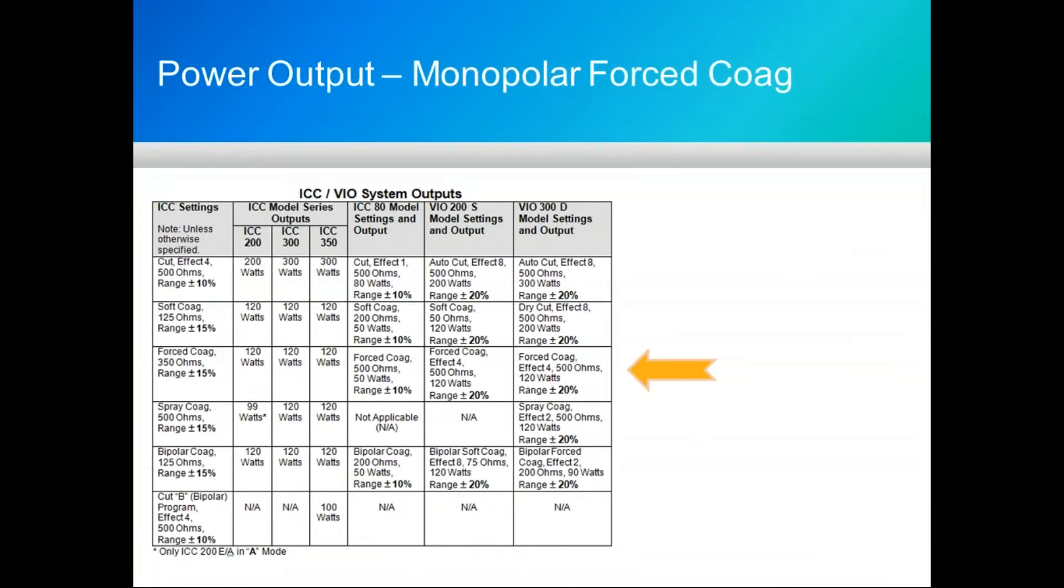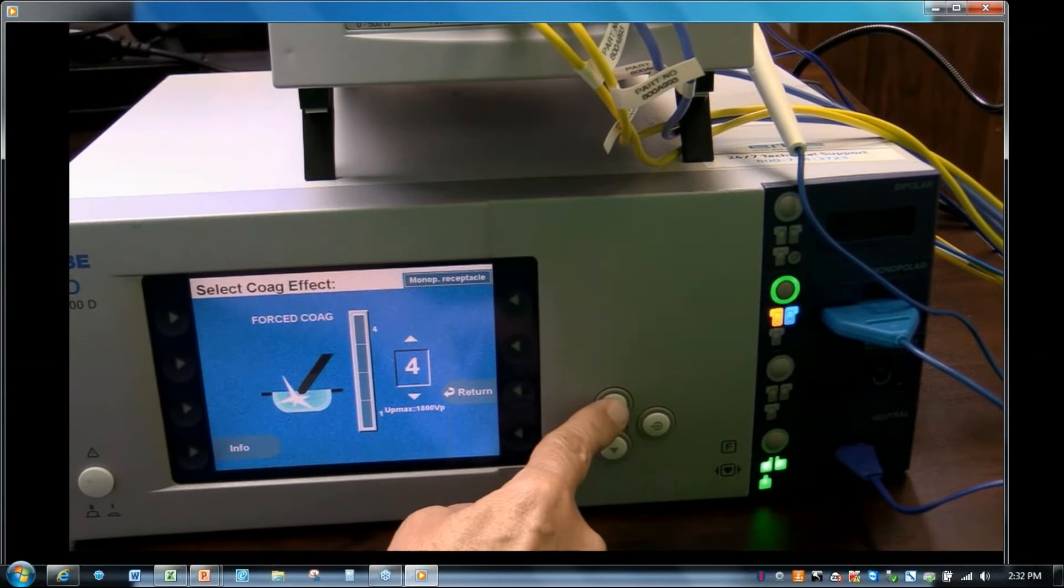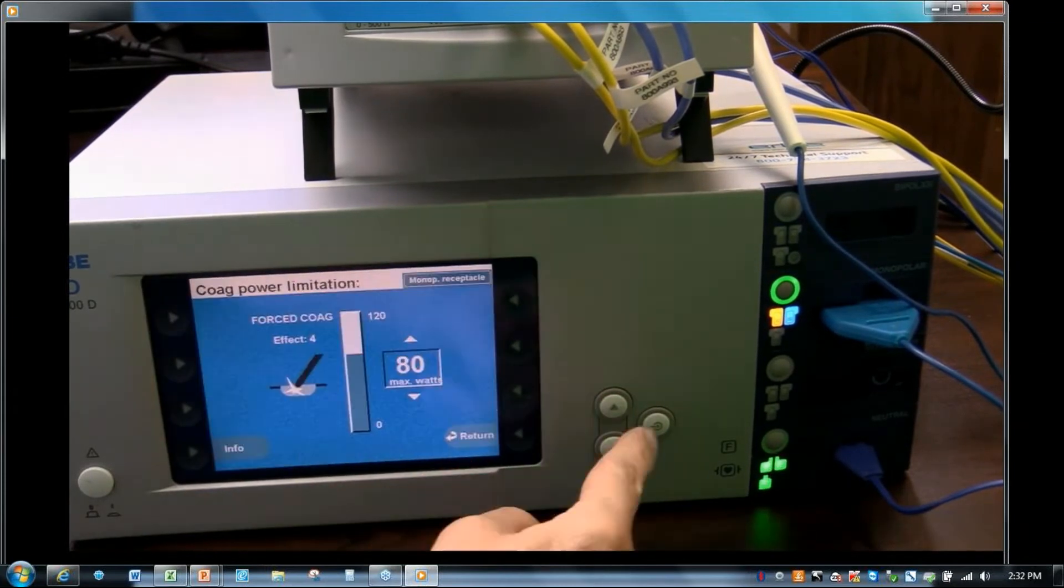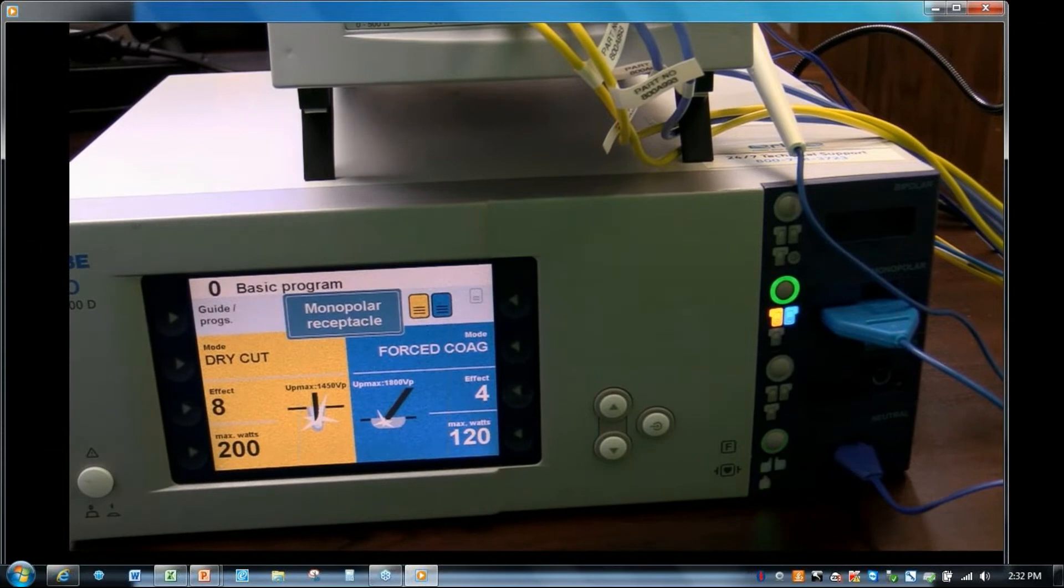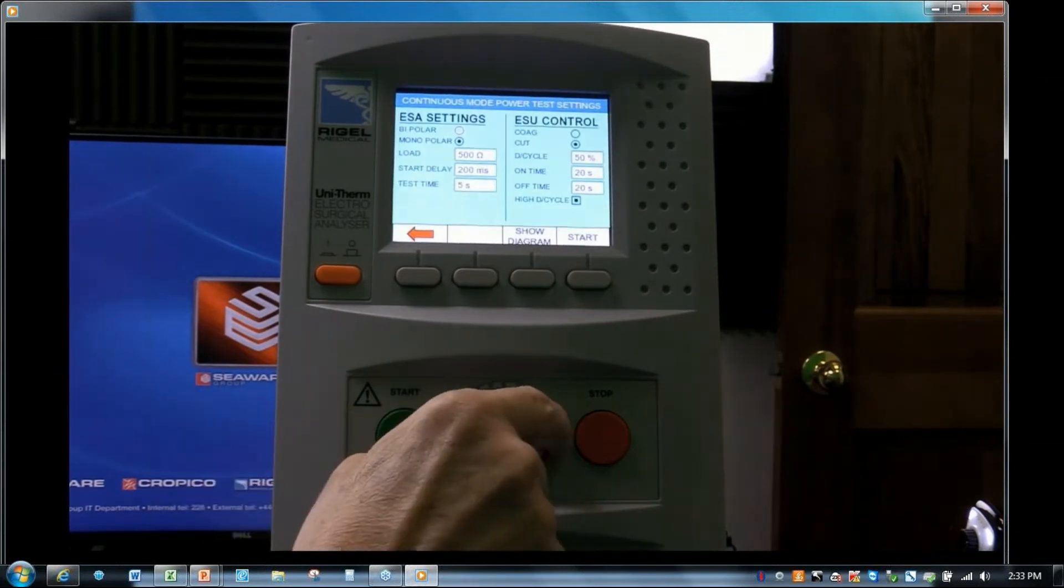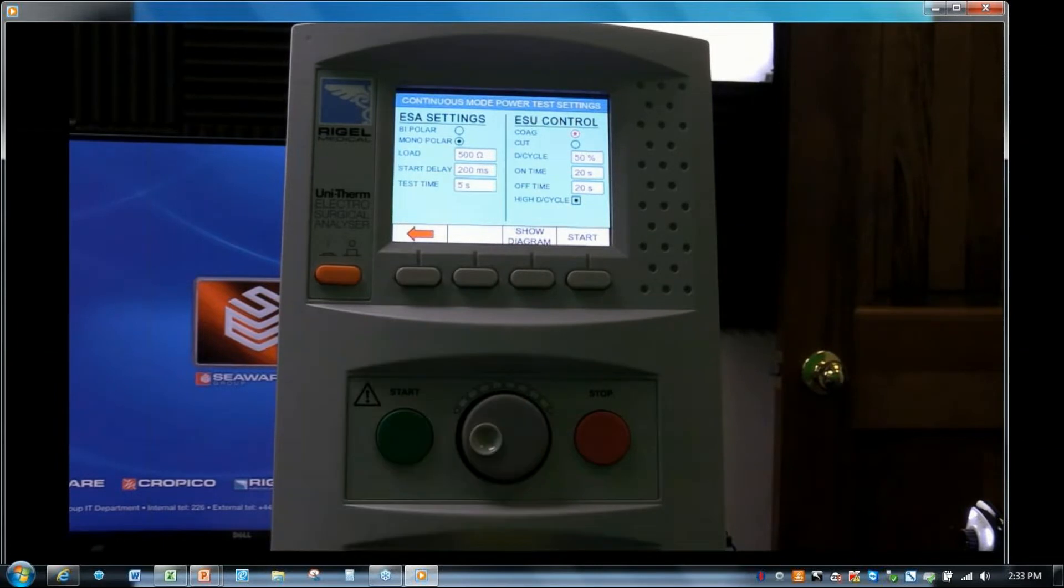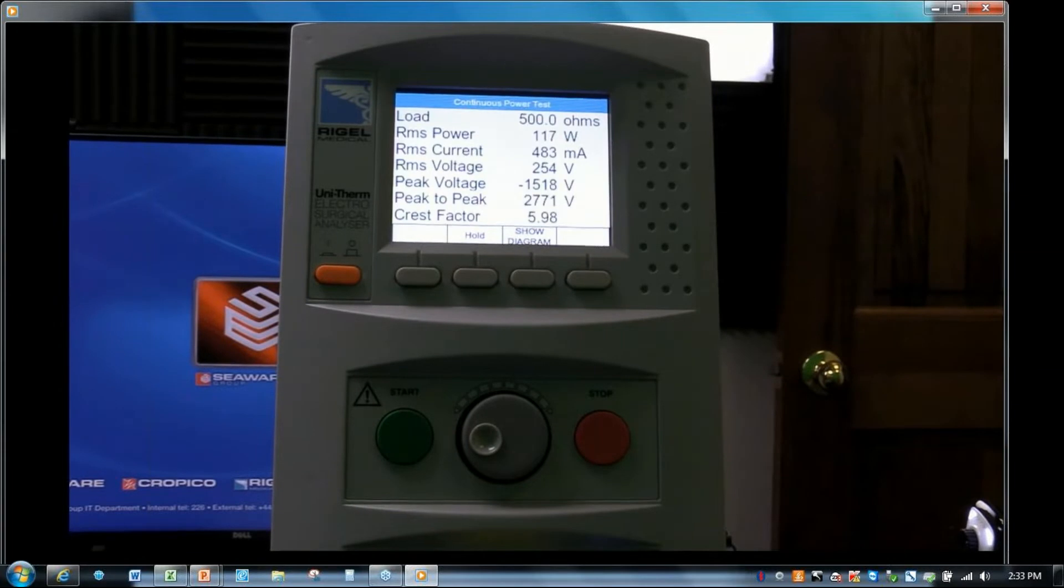Our next test, according to their operational sheet, is force coag. Going to set the effect for 4. Resistance remains at 500 ohms and we're going to set it for 120 watts. Coag settings now on the right-hand side. We're testing at maximum power, 120 watts. Acceptable range is plus or minus 20% for any of the power settings on the 300D. We're measuring 117 watts, well within specification. Also notice how the crest factor is changing as we're going from these various tests.